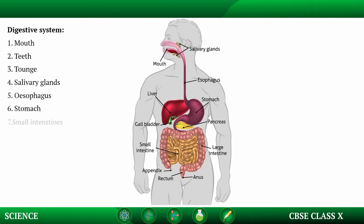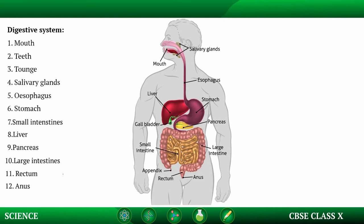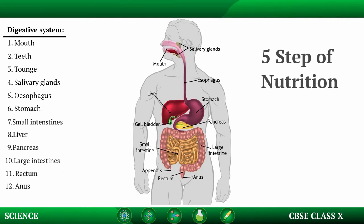Small intestines, liver, pancreas, large intestine, rectum, and anus — these are all the organs included in the digestive system of the human body. Let's discuss all 5 steps of nutrition along with the important organs of the digestive system.